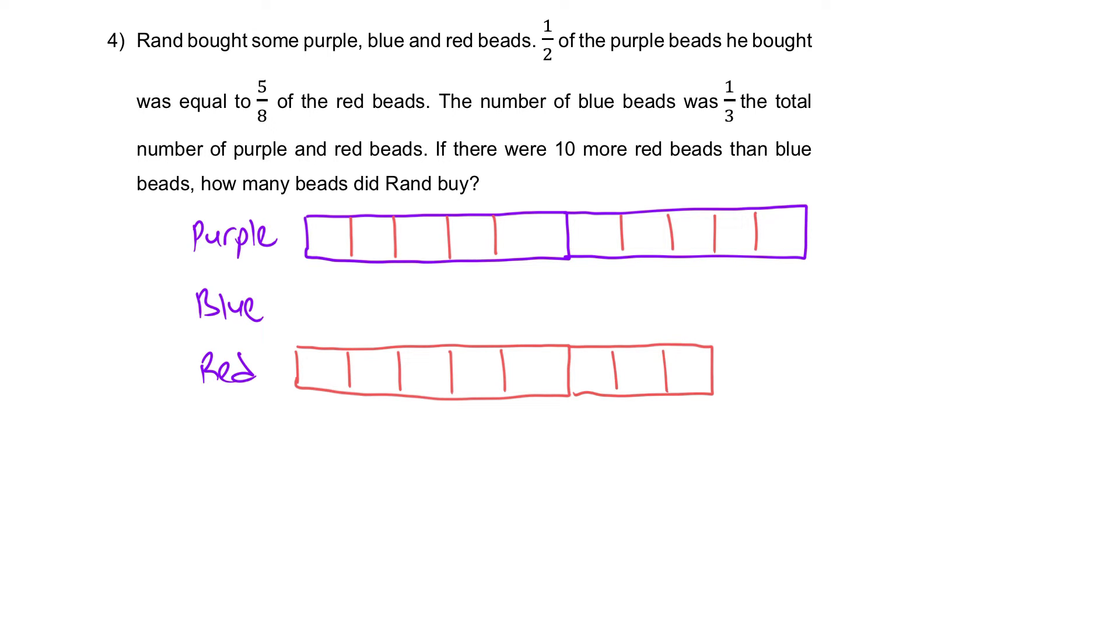So let's see whether it's correct. I'm going to cover it so that it's clearer. Half of the purple, this is the whole purple. I'm going to half of it. Half of it is equal to five units of the red. So one, two, three, four, five. So you see what I'm trying to do here? So I'm done with this information.